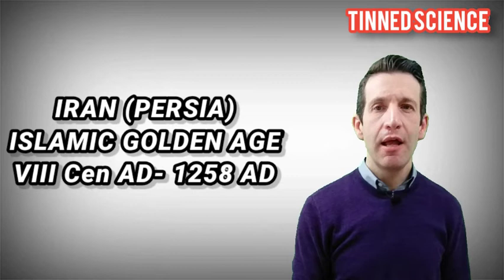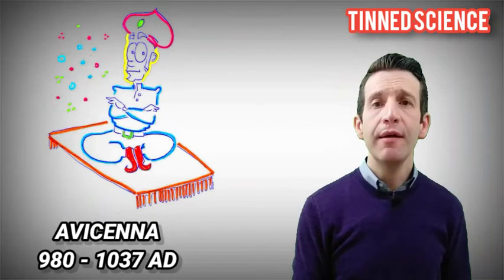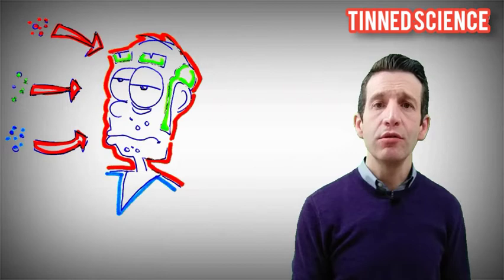One thousand years later, in Persia, present Iran, during the Islamic Golden Age, that was a marvellous period of cultural and scientific progress, Avicenna reproposed the theory of microorganisms as cause of diseases. In particular, his observations were about the smallpox.